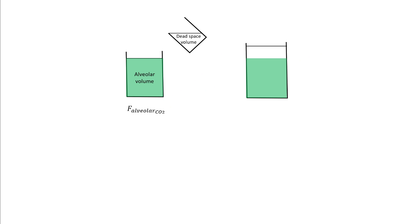Now let's understand this a little more intuitively. We have alveolar volume and dead space volume. When you exhale, this is your dead space portion, this is your alveolar portion, and the combination is your tidal volume. The average CO2 would then be your fraction of CO2 in the expired air.